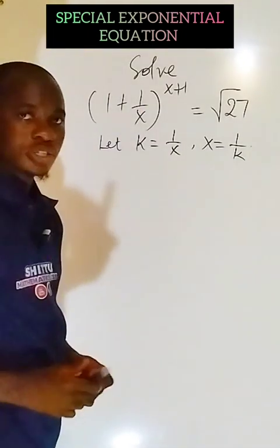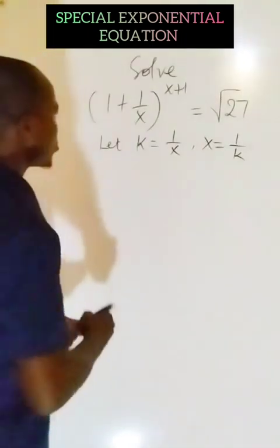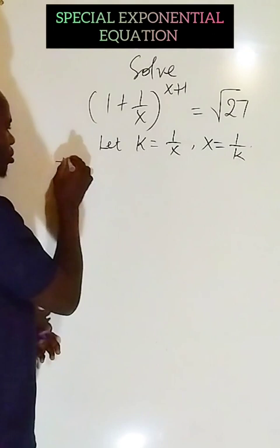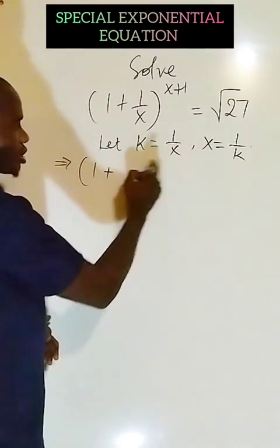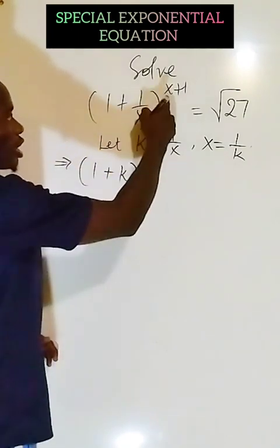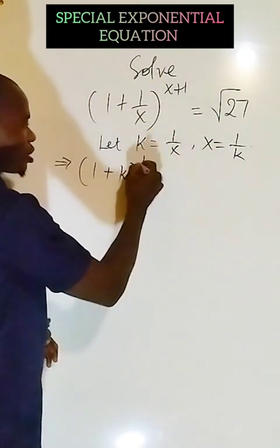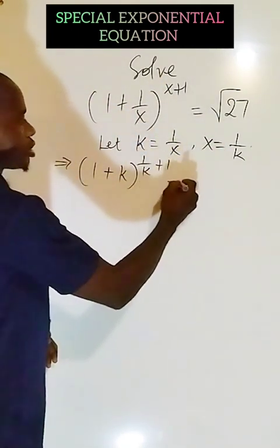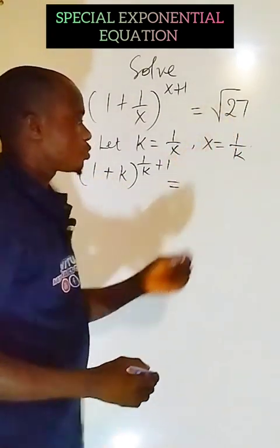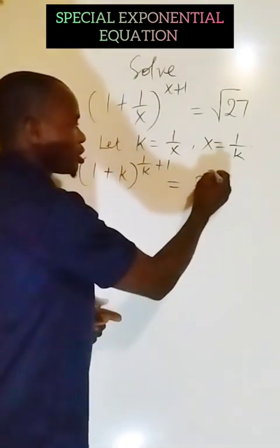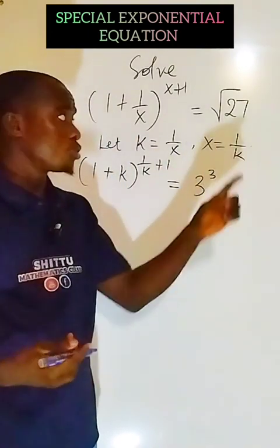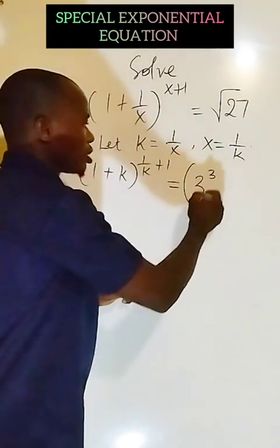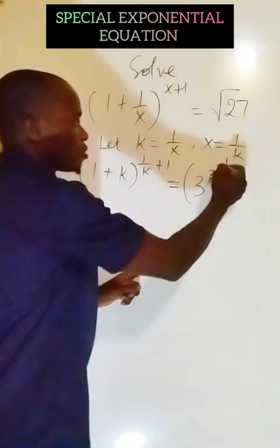In this equation, I'm going to have (1 + 1/x) is what is k, and I have x to be equal to 1/k. Then plus 1. So now this one, I'm going to rewrite it as 3 to the power 3, because 3 multiplied by 3 multiplied by 3, I'm going to be having 27, and the square root will be written as 1/2.